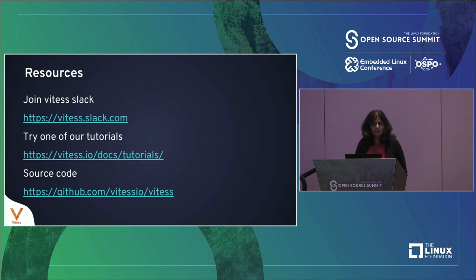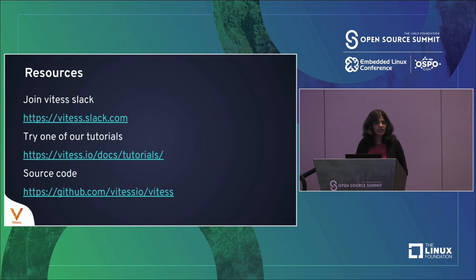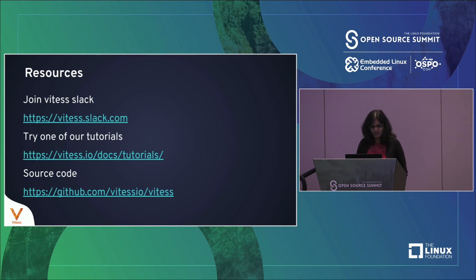For anyone interested in VITESS, we have a vibrant Slack community with almost 2,500 people — big enough to have lively discussions, but not so big that newcomers get lost. There are always people willing to help anyone new to the community. We have tutorials in the form of getting started guides that walk you through running a simple VITESS setup either locally on Linux or Mac, on Kubernetes, or in Docker. The source code is available on GitHub and everyone is welcome to check it out.